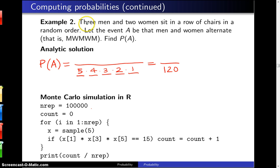Now we come back to the problem statement. Three men and two women sit in a row of chairs in a random order. What the words random order mean right there is that all 120 of these different possibilities are equally likely.